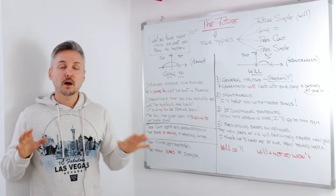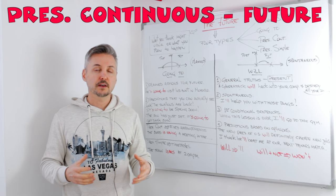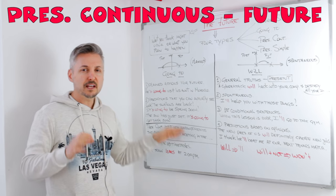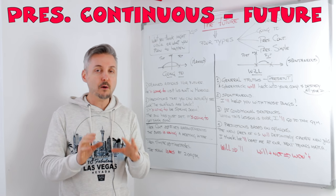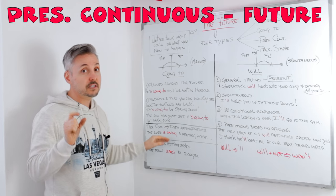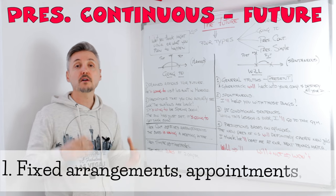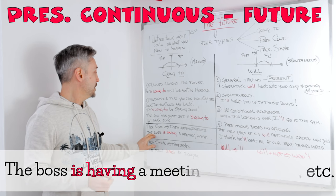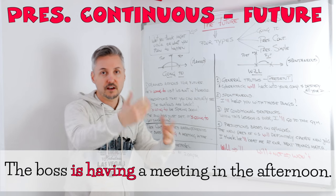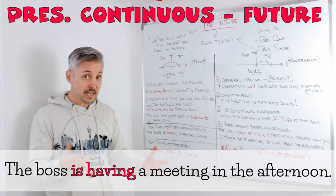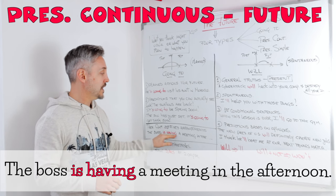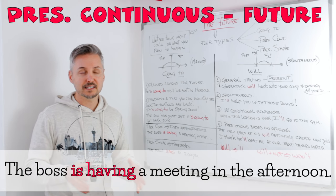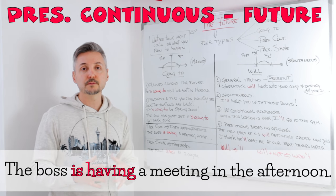What about the present continuous or present progressive? Some people ask me if we can use it, and the answer is yes. The difference is that we use the present continuous for fixed arrangements. For example: 'The boss is having a meeting in the afternoon.' I could also have said 'The boss is going to have a meeting in the afternoon' — it's essentially the same. We use the present continuous for the future a lot.